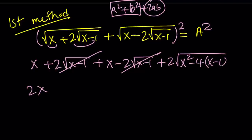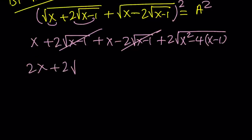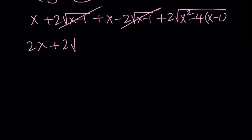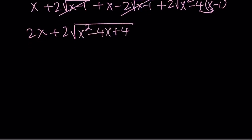And then 2 times — let's go ahead and expand this and see what happens. We use the distributive property and we get x² minus 4x plus 4. This should be familiar to you. And this equals a².